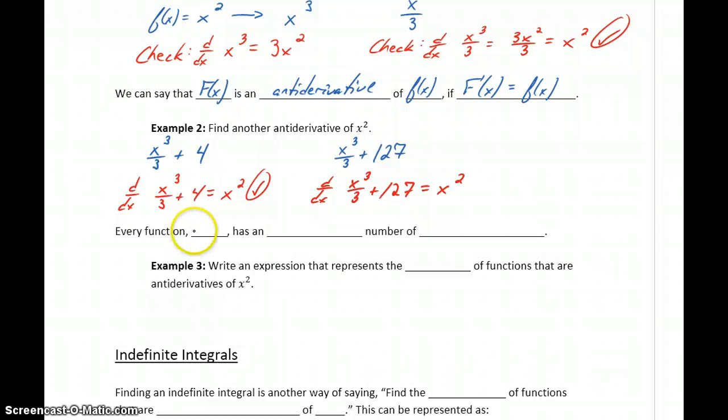What we end up with is that every function f of x has an infinite number of antiderivatives, because I could keep constructing these antiderivatives using any number here that I want. As long as there's no variable, that derivative always goes to 0, so each time we construct a new antiderivative.